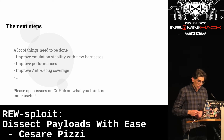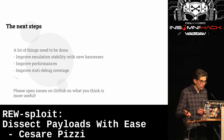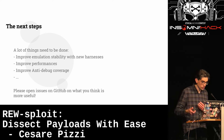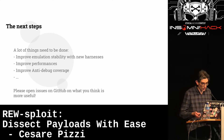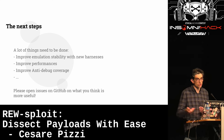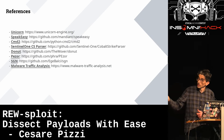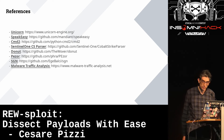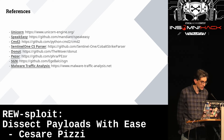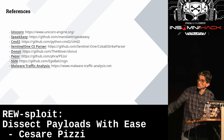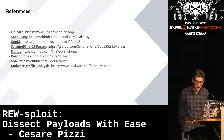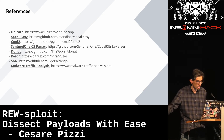Next steps: there's a lot to be done — improve emulation stability, improve performance, improve anti-debug coverage. We're at version 0.4 right now. Everything I showed today works, but a lot more needs to be added. Please go to GitHub, clone it, open issues, get in touch with me if you find it useful. Credits: Unicorn Engine and SpeakEasy are the two pillars; cmd2 and the Sentinel One parser are other important tools; Donut, Pezo, and SGN are the tools I'm trying to emulate; and thanks to Malware Traffic Analysis for providing samples.